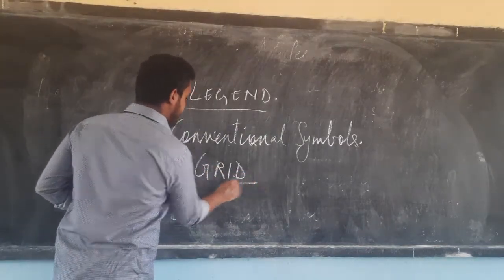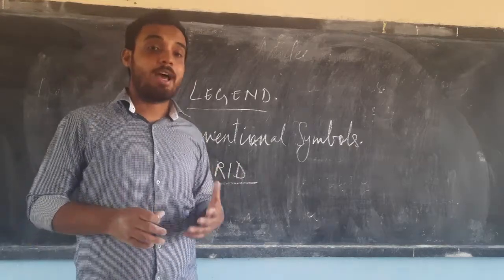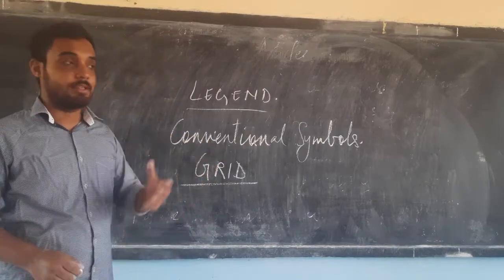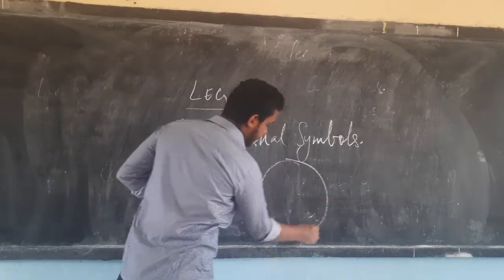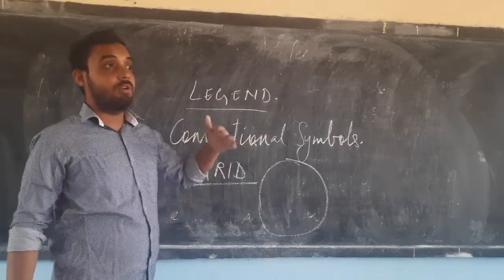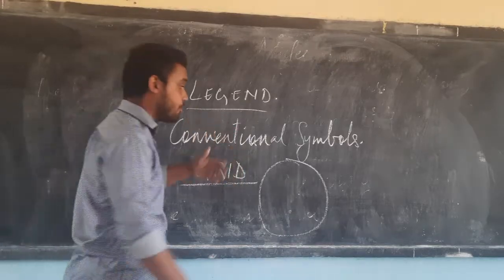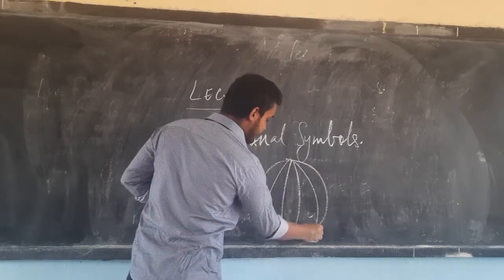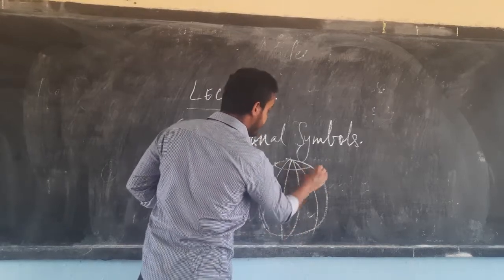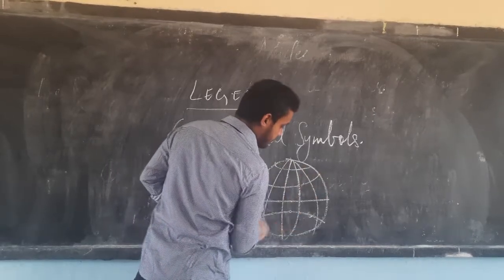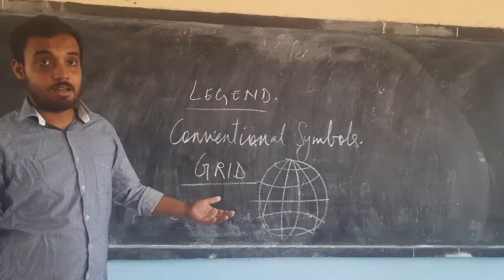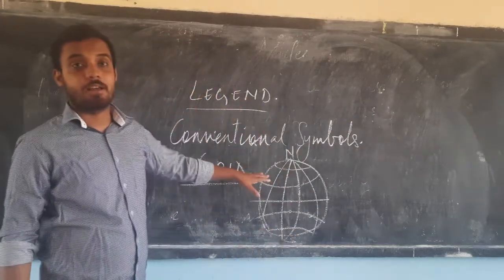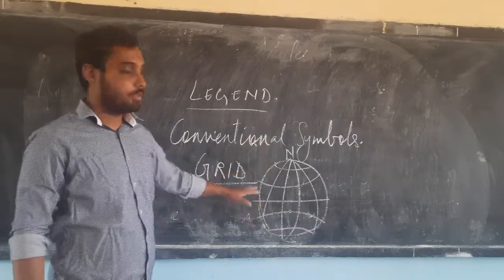Grid is simply known as a network — a network of vertical and horizontal lines. Now this is Earth, and we have imaginary lines drawn all over the Earth. The lines which are running from the north pole to the south pole are vertical lines and they are called longitudes.